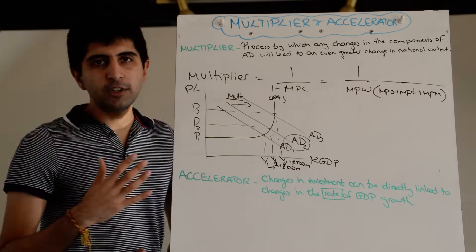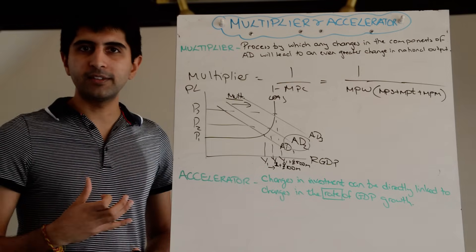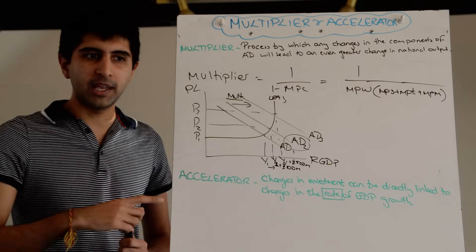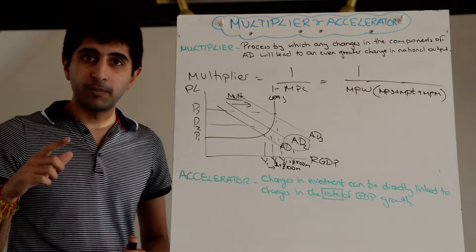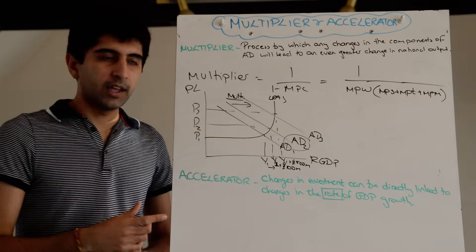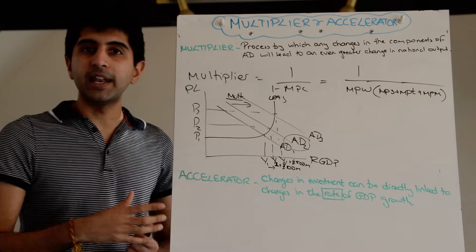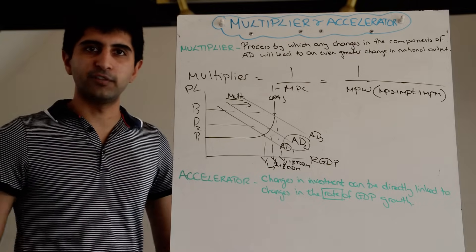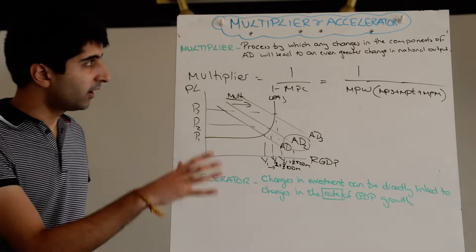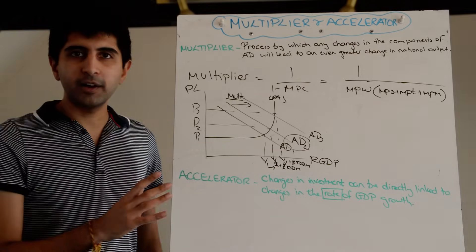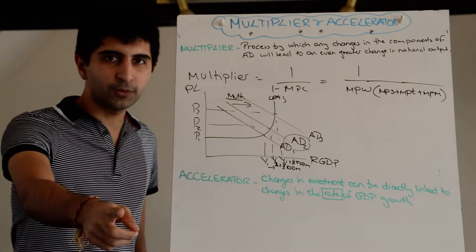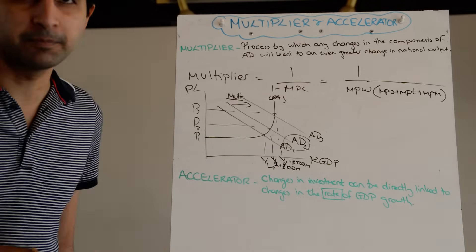Both effects — Multiplier and Accelerator — can be used to explain the shape of the business cycle, which I've explained in my more advanced economic cycle video. Multiplier and Accelerator done. Thanks for watching, see you next time.